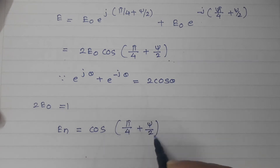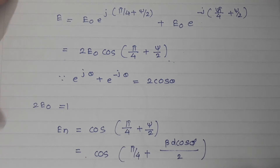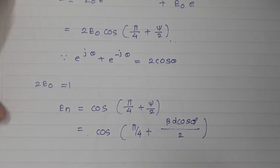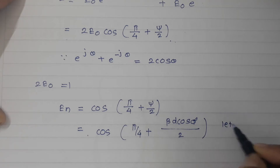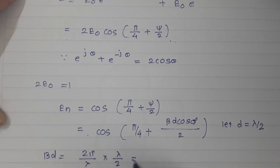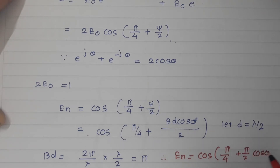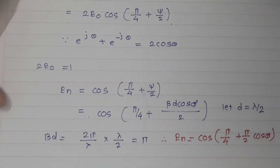The normalized field is En = cos(π/4 + βd·cos(φ)/2), since ψ = βd·cos(φ). For d = λ/2, βd = (2π/λ)·(λ/2) = π. Therefore the normalized field becomes En = cos(π/4 + (π/2)·cos(φ)).